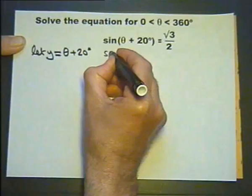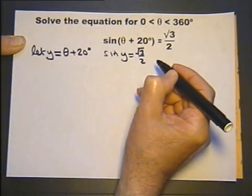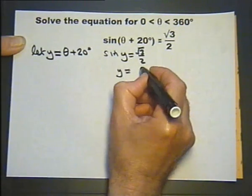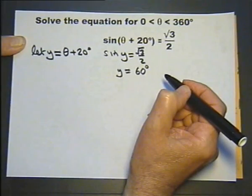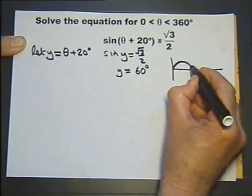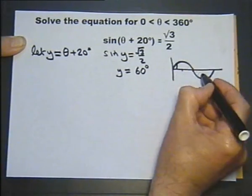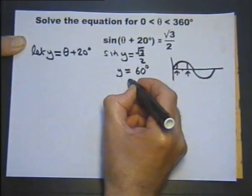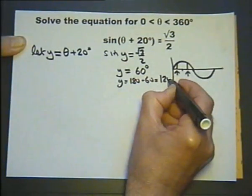So therefore the equation looks simpler now: sine of y equals root 3 over 2. Inverse sine of sine y gives you y, and the inverse sine of root 3 over 2 is one of those you should know — it's 60 degrees, but you could use a calculator to check that. Now looking at the sine graph between 0 and 360, 60 degrees is there and therefore this angle will have the same sine value as 60 degrees — in other words 180 minus 60, so y can also equal 120 degrees.